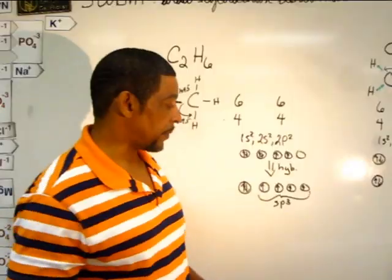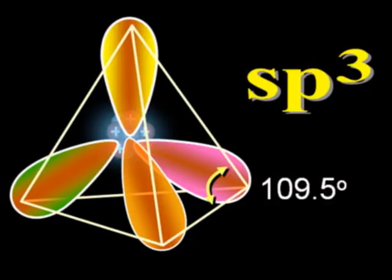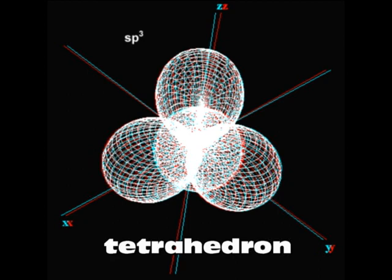Thus, this type of hybridization is known as sp3 hybridization. In the compound, the resulting bond angles after carbon bonds with the hydrogens will be 109.5 degrees, which is characteristic of a tetrahedron.